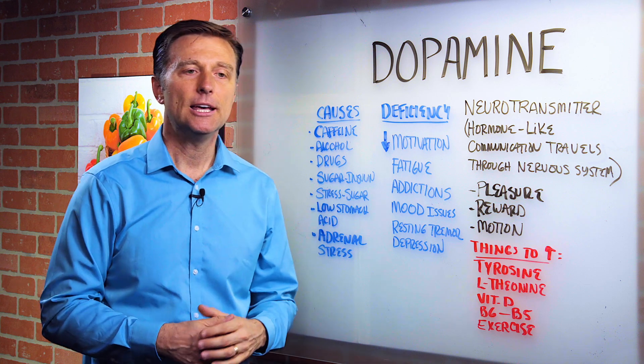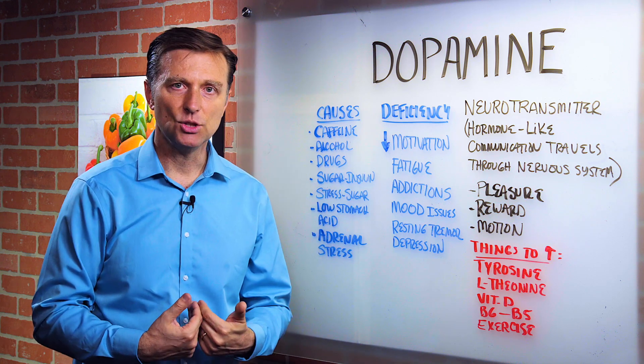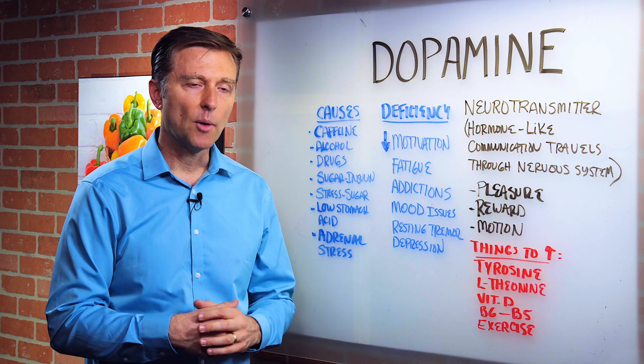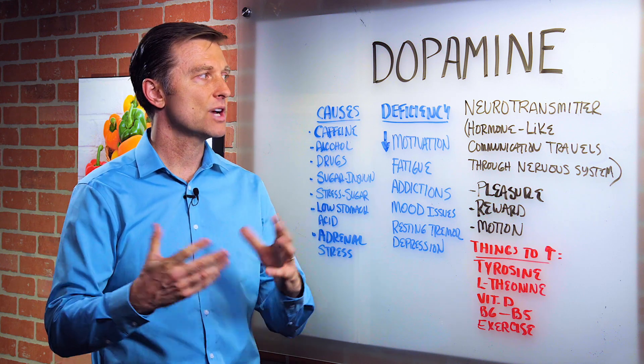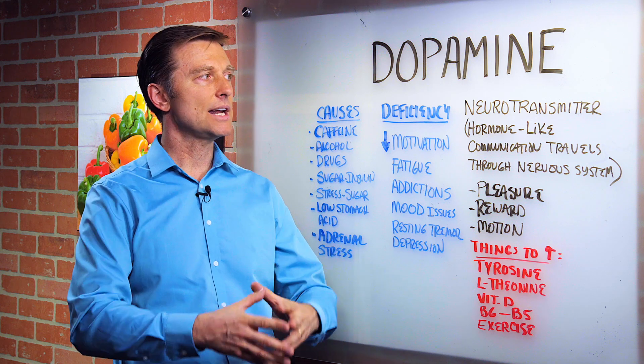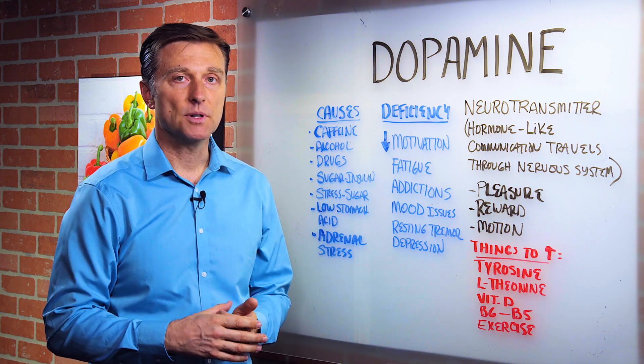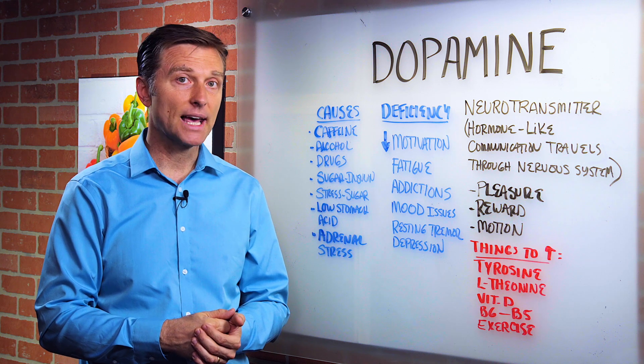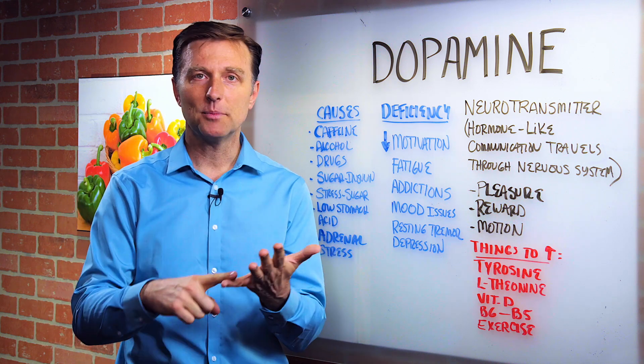Low stomach acid. If you don't have enough stomach acid, you can't digest protein in general. So you start developing a problem with making neurotransmitters in general. So you'll be deficient in a lot of different neurotransmitters. So the point is, how do you know if you're deficient in stomach acid? Well, number one, do you have heartburn?